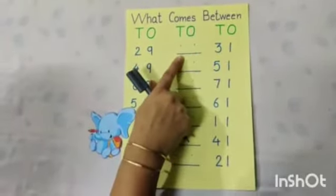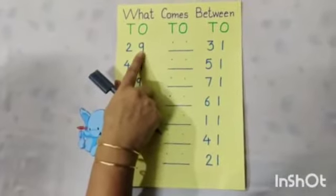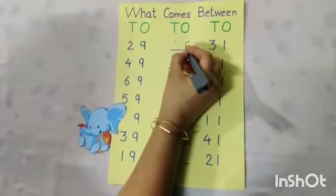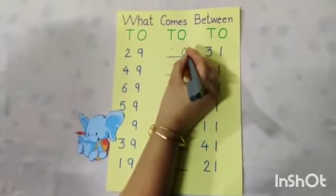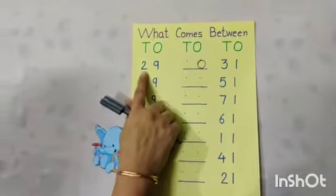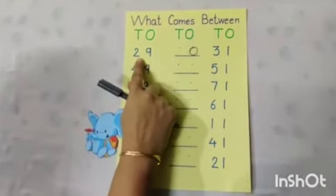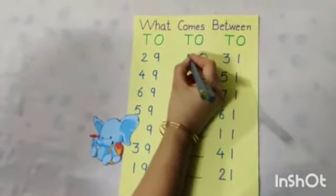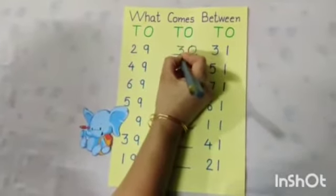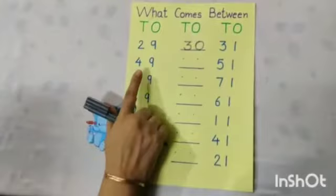So, dear kids, what comes after 9? Yes, 0. Very good. And here, next number to 2. So, say bye to number 2 and say hello to next number, that is number 3. Very good. 3, 0, 30.